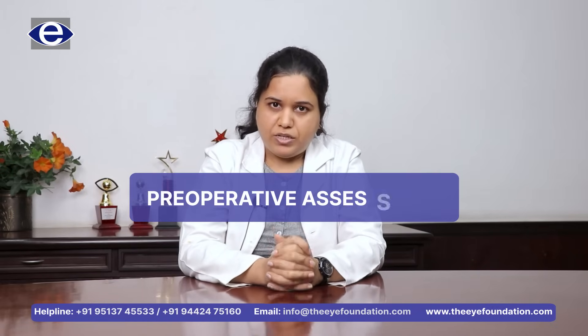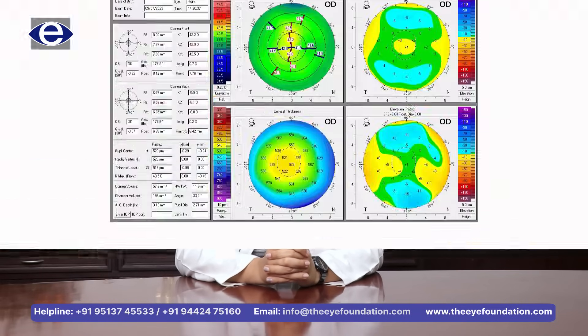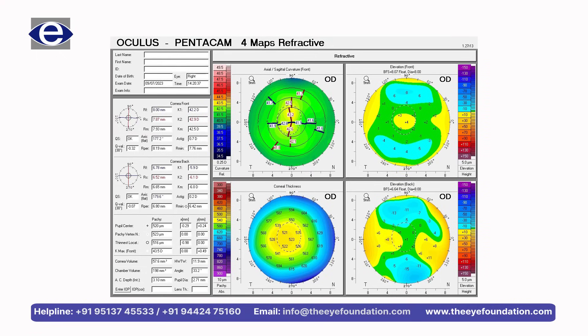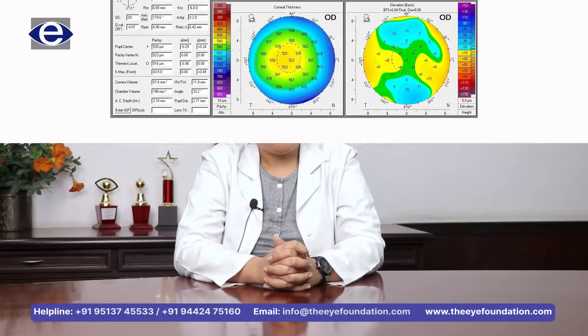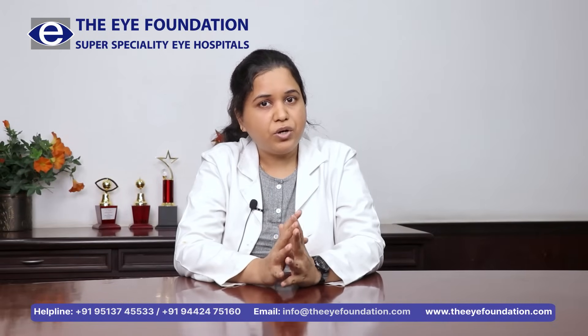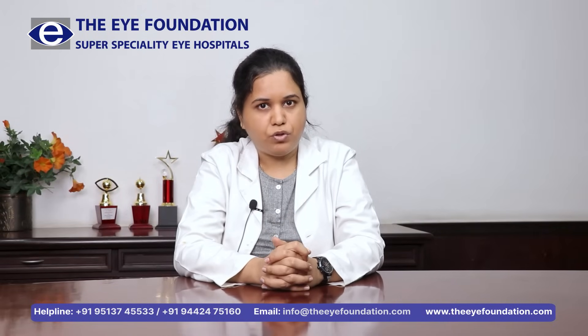Coming to the preoperative assessment: first, a detailed power evaluation is done for the patient so that the exact power is calculated. Then, the patient is taken for the cornea scan. The cornea scan is one of the most important examinations before laser refractive surgery. The curvature of the cornea is seen first, then the thickness of the cornea is seen. According to the curvature and the thickness, the particular procedure is selected for the patient.